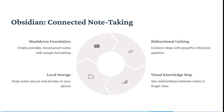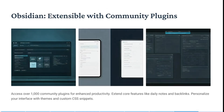Now let's look at Obsidian — a connected note taking app that creates portable, future-proof notes with simple formatting. You can keep notes secure and private on your device, and connect ideas with powerful reference systems. You can see your relationships between notes in a graph view, and you have access to over 1000 community plugins for enhanced productivity.